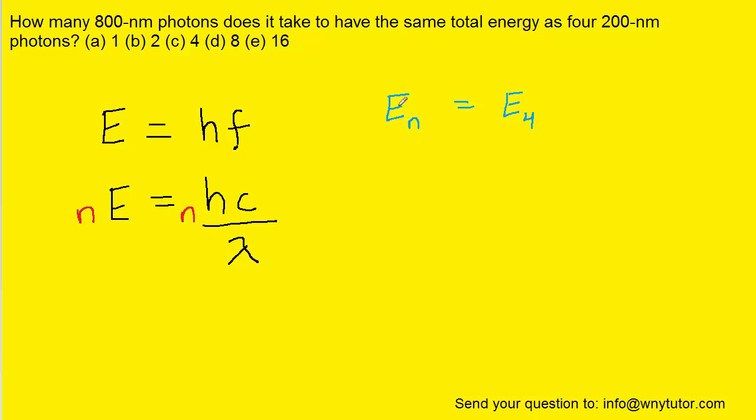Now, in this question, we want the energy of some unknown number of photons to equal the energy of 4 photons. So we can write E sub n equals E sub 4. We will replace each of these energy terms with the expression that we just developed earlier.